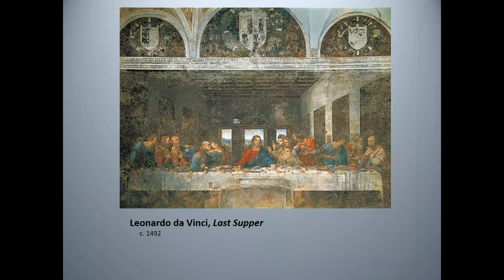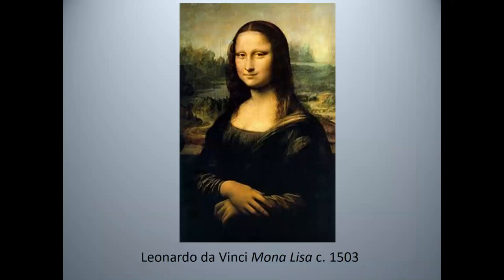The Last Supper, a 1492 fresco on the wall of a church refectory in Milan, shows the aftermath of Jesus' proclamation that one of his apostles will betray him. Notice the sharp V shape that emphasizes the divide between Jesus and his betrayer Judas to his right. The famous Mona Lisa gained much of its fame after it was stolen from the Louvre in 1911. It was recovered two years later. This portrait has fascinated many viewers due to the subject's ambiguous half smile and her gaze that is aimed directly at the viewer.